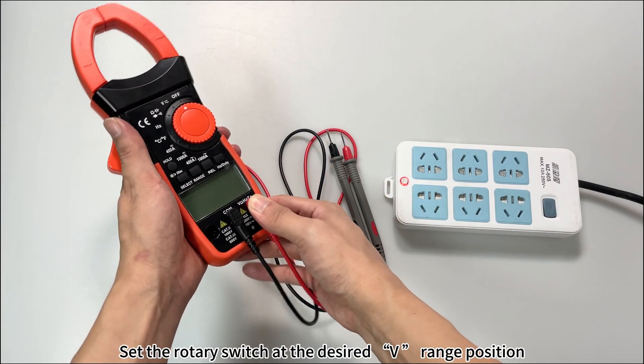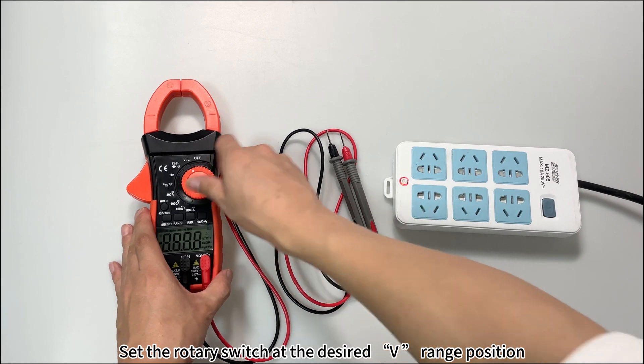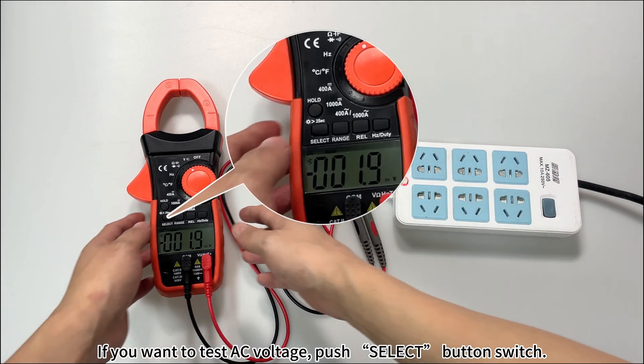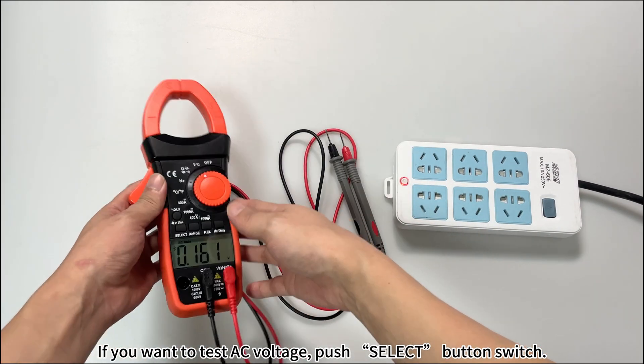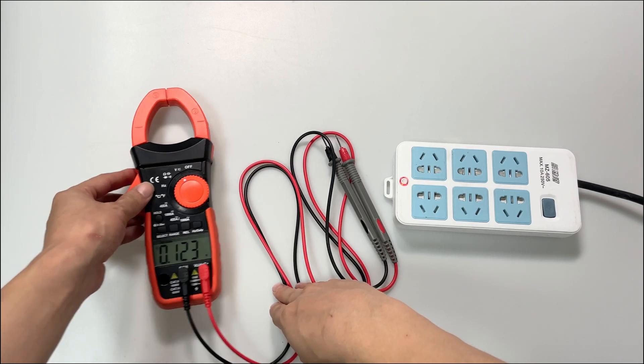Set the rotary switch at the desired V range position. If you want to test AC voltage, push the select button switch.